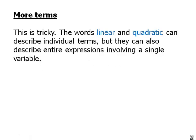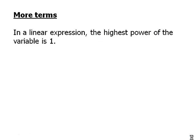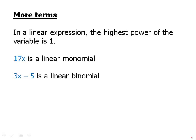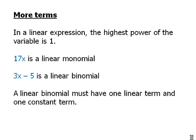Now we'll make a distinction, and this is a little tricky. The words linear and quadratic can describe individual terms, but they can also describe the entire expression involving a single variable. In a linear expression, the highest power of the variable is one. So 17x is a linear monomial, 3x minus 5 is a linear binomial. So one of them is a one term thing, the other is a two term thing. And notice we don't have many options here. A linear binomial must have one linear term and one constant term. As long as we're dealing with only one variable, those are the only two options for the two terms.